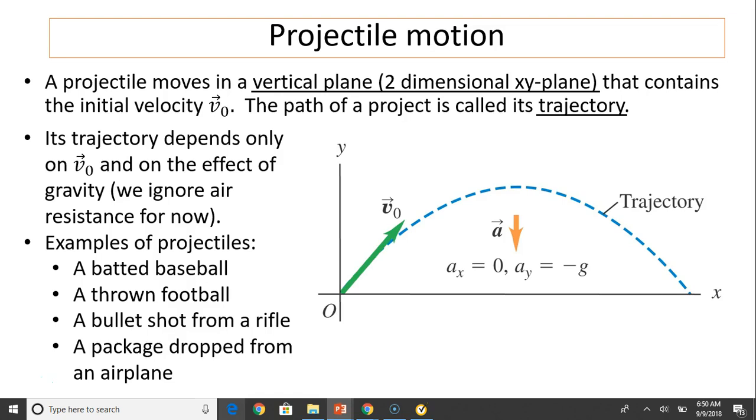A projectile moves in a vertical plane, that means it's two-dimensional. That plane contains the initial velocity v0. Remember v0 is a vector quantity with magnitude and direction. The path of a projectile is called its trajectory. Its trajectory depends only on v0 and on the effect of gravity. For now we ignore air resistance.